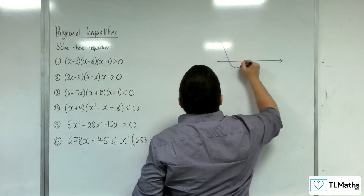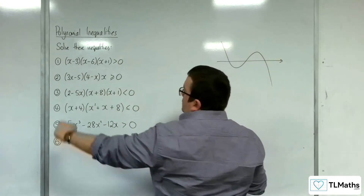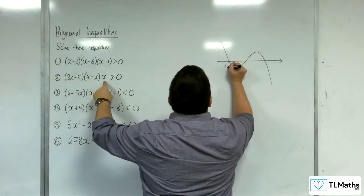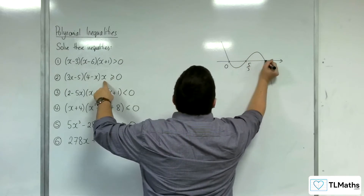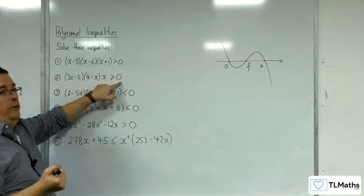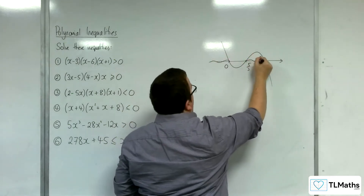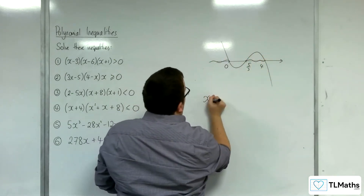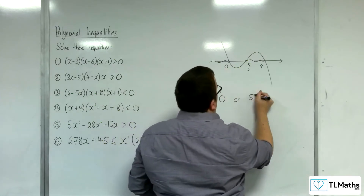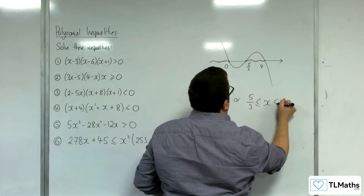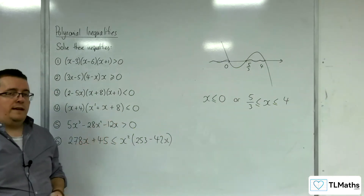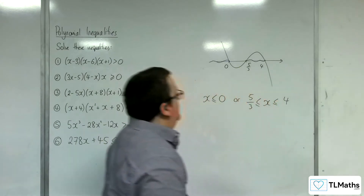This is going to cross through at 5 thirds, 4, and 0. So in order: 0, 5 thirds, and 4. Where is the graph above or equal to 0? It's above it there and there. So x is less than or equal to 0, or x is greater than or equal to 5 thirds but less than or equal to 4. That is the region — or rather the regions — we need to find.